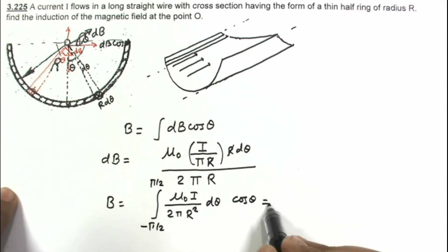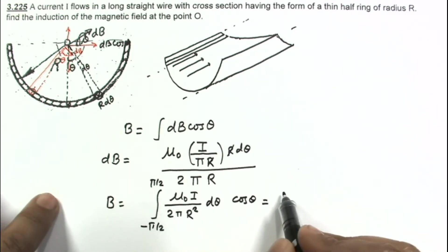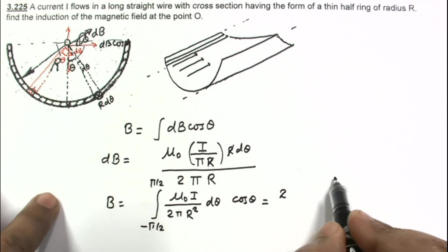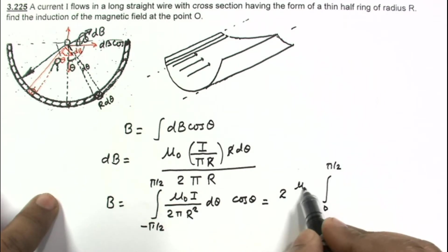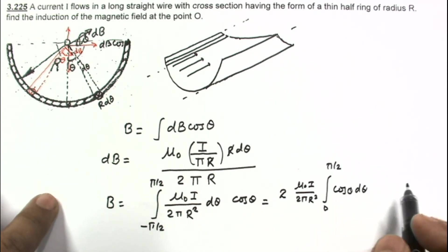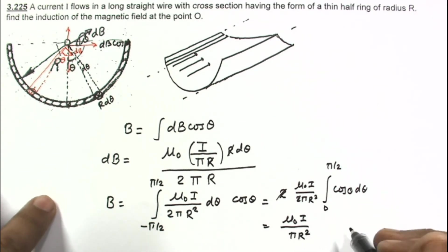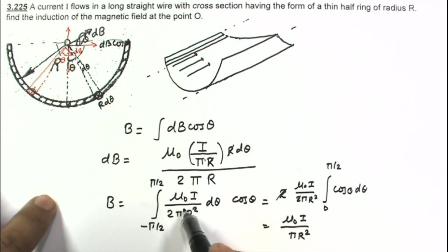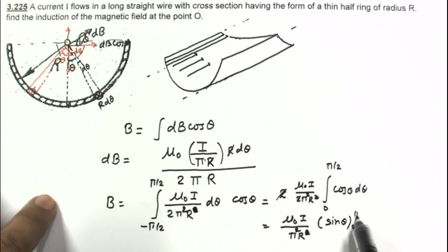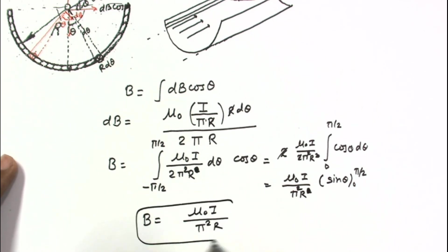All constant terms come out of the integral. We can also integrate from 0 to pi by 2 and double the result. So B equals 2 times mu naught i divided by pi squared r, times the integral of cos theta d theta from 0 to pi by 2. The integral of cos theta is sin theta, evaluated from 0 to pi by 2. Since sin(pi/2) equals 1 and sin(0) equals 0, the final answer is B equals mu naught i divided by pi squared r.